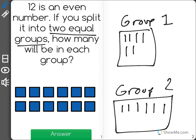It's an even number because they both got the same. Now as you can see, group 1 has 6, and group 2 also has 6.